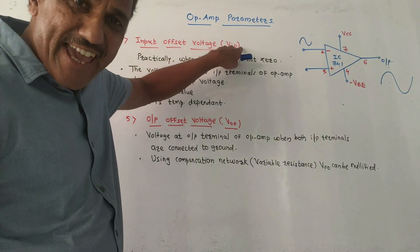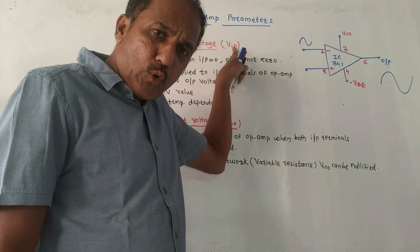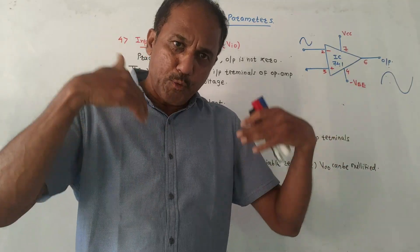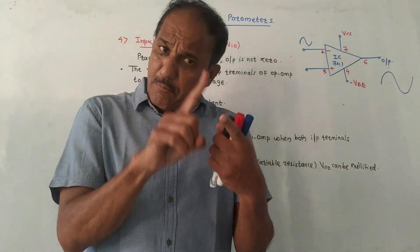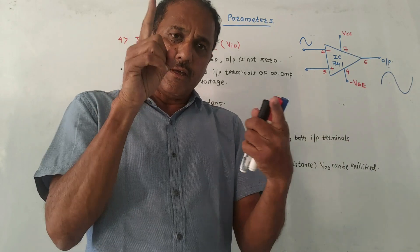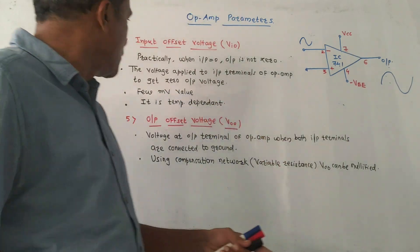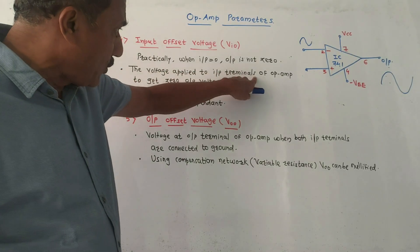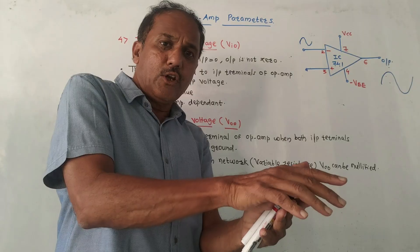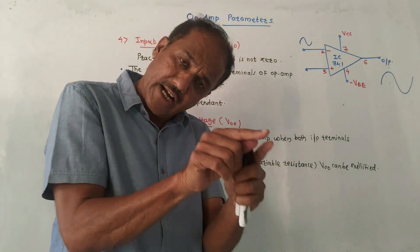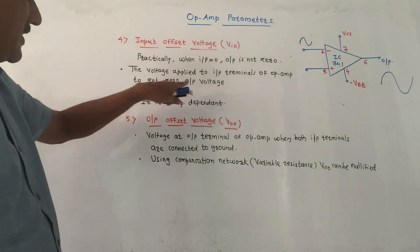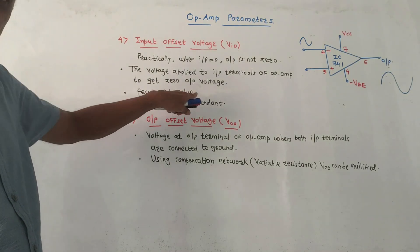The next parameter is input offset voltage, notation VIO — 'I' stands for input, 'O' stands for offset. Ideally when input is zero, output must also be zero. But in practical cases, there can be an imbalance in the differential amplifier, so even if the input is zero, the output is not zero. The voltage we need to apply at the input terminals to make the output voltage zero is called input offset voltage.